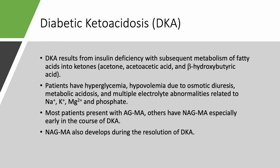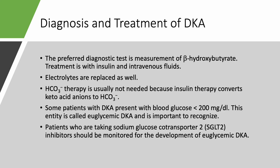Some patients present with non-anion-gap metabolic acidosis early in DKA, depending on how much the patient is excreting ketones in the urine. Later in the course, anion gap metabolic acidosis can convert to non-anion-gap once ketone salts are excreted. The preferred diagnostic test is measuring beta-hydroxybutyrate. Treatment is insulin and intravenous fluids.